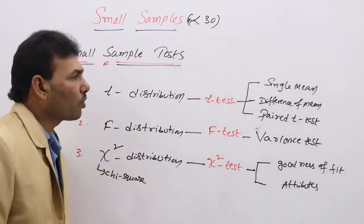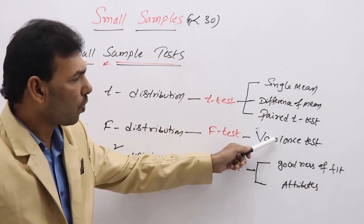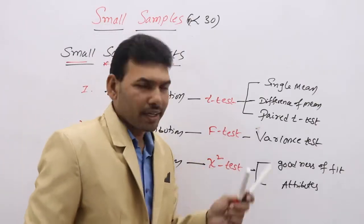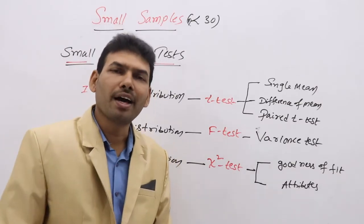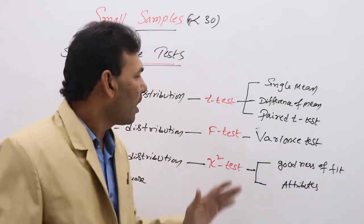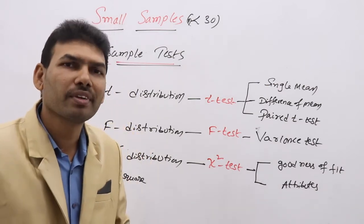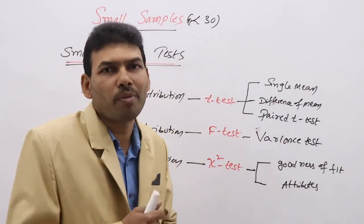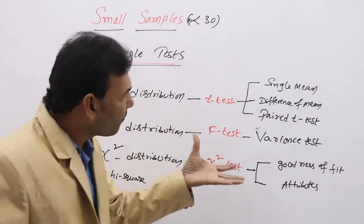So like this we are going to discuss 6 tests in total. But whenever you get a question, it won't mention 'apply T-test for single mean' or 'apply chi-square test for goodness of fit.' We have to identify which test to apply for the given problem. For that, I will briefly give you some small techniques to identify the test for the given small samples.